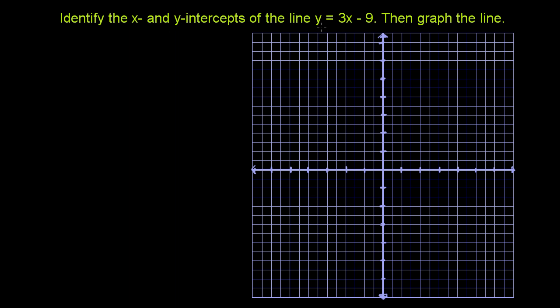Identify the x and y-intercepts of the line y equals 3x minus 9, then graph the line.